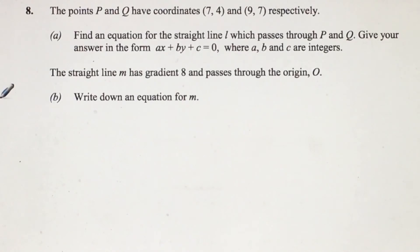8b: The straight line M has a gradient 8 and passes through the origin O. Write down an equation for M.